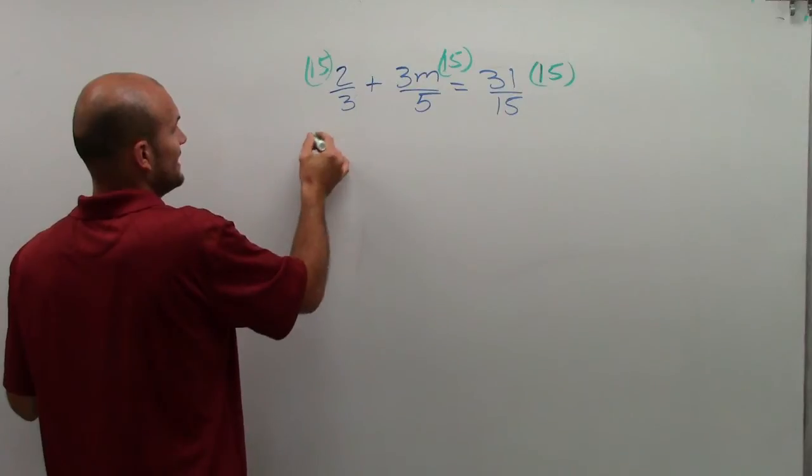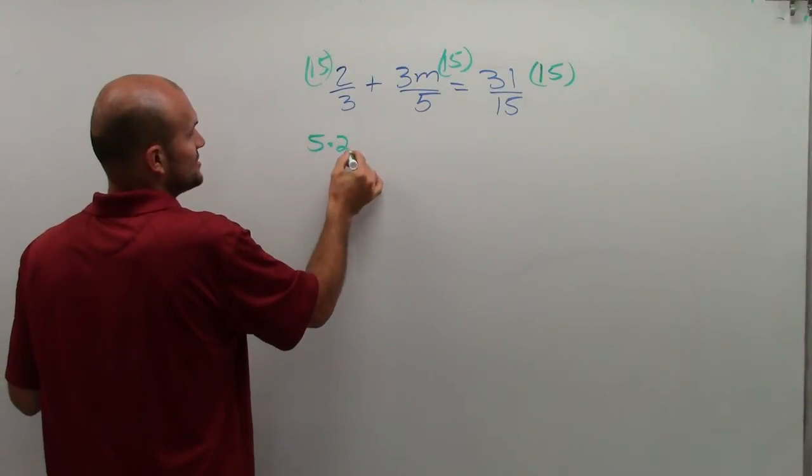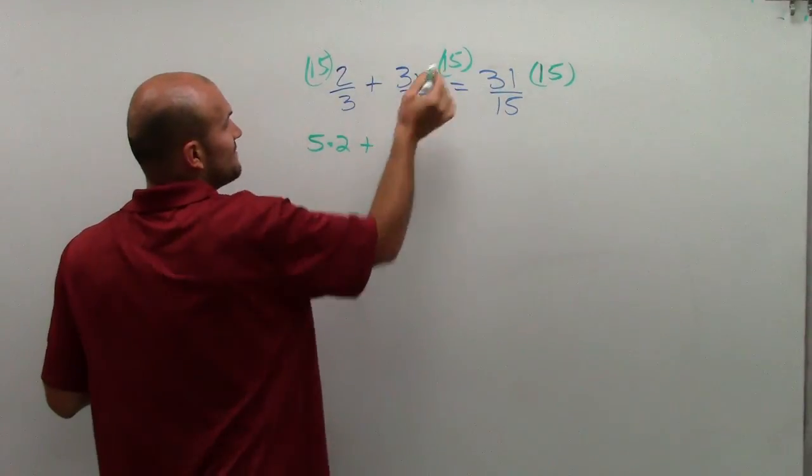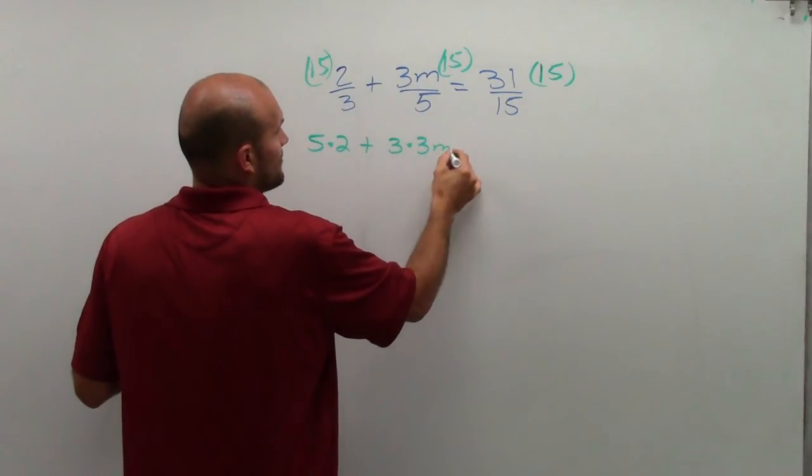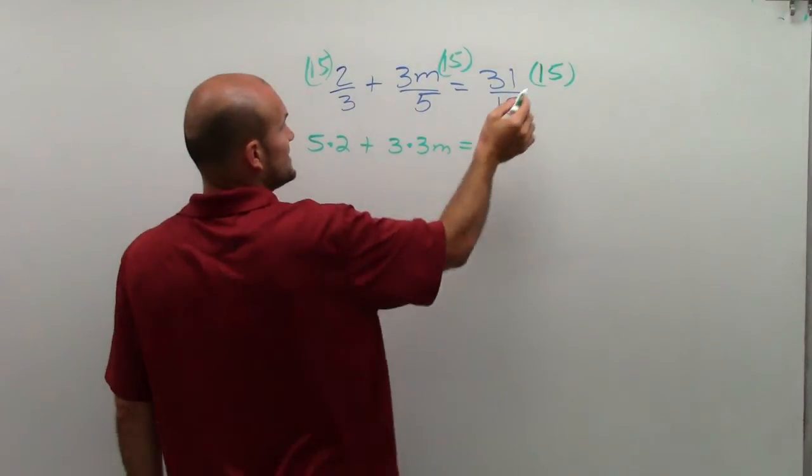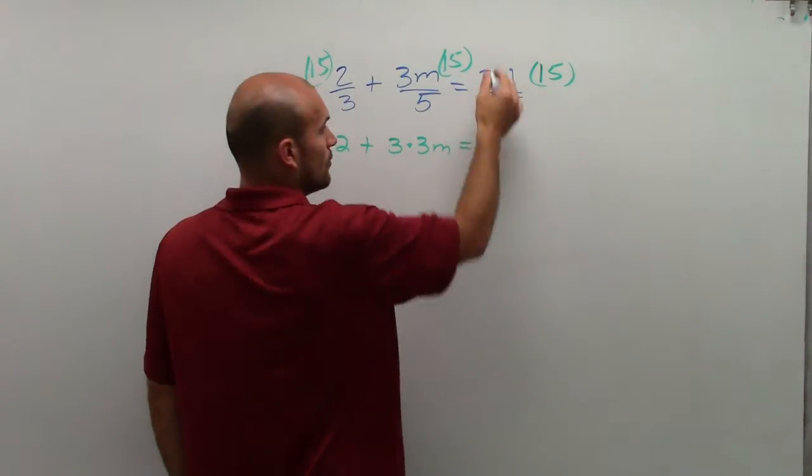3 divided into 15 is 5 times 2, plus 5 divided into 15 is 3 times 3m, equals 15 divided by 15 is 1, 1 times 31.